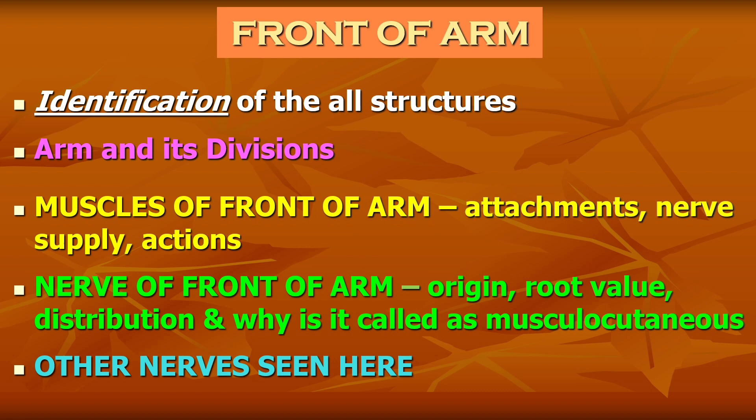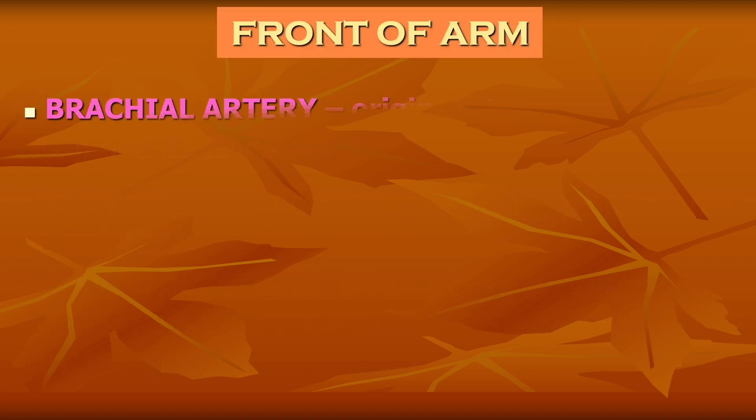Other nerves seen here, like the median nerve and ulnar nerve, can be asked for identification, origin, root value, and distribution. The brachial artery can be asked for its origin, extent, and branches.